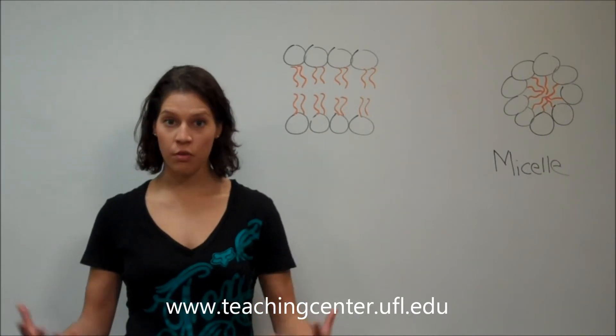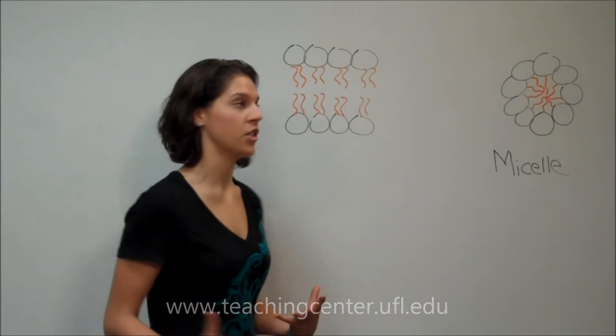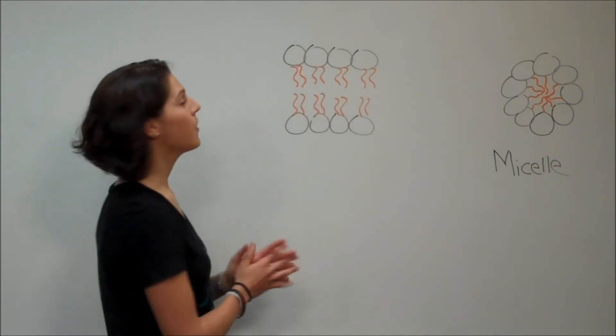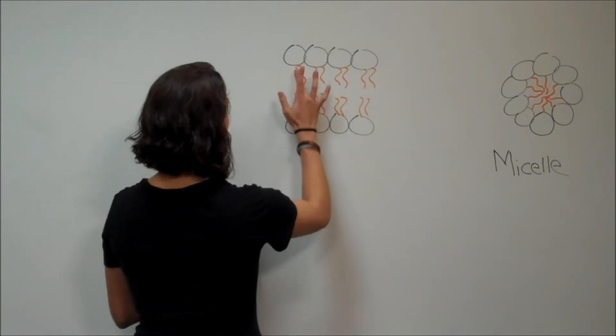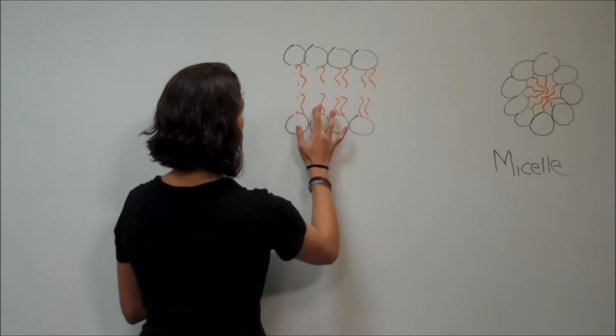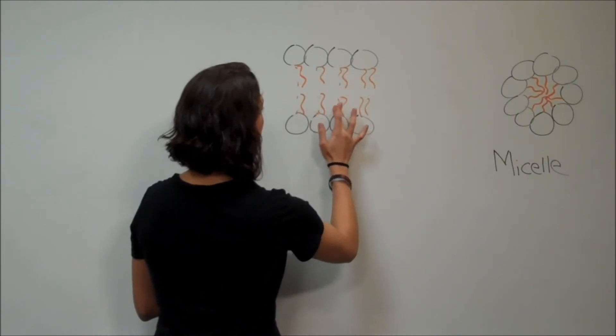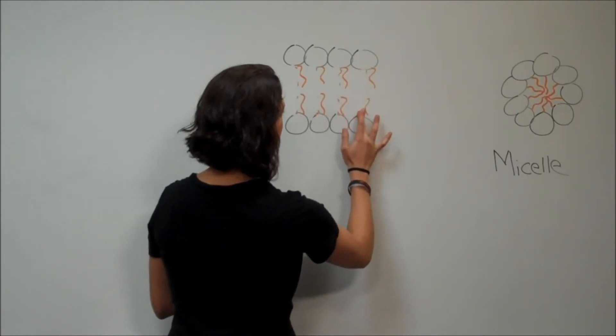So say we had snake venom running through our blood with this phospholipase A2, and say this is part of a cell. It would cleave C2, removing a fatty acid from each of these glycerophospholipids, causing it to become a lysolipid, which just has one fatty acid.